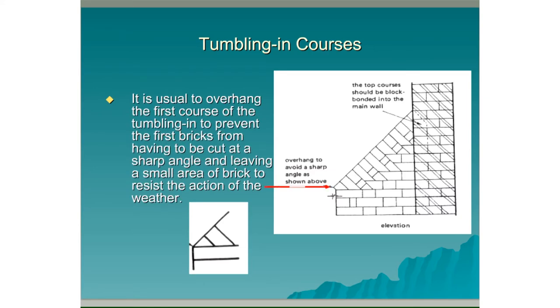It is usual to overhang the first course of the tumbling in to prevent the first bricks from having to be cut at a sharp angle and leaving a small area of brick to resist the action of the weather. The small overhang also acts as a drip.